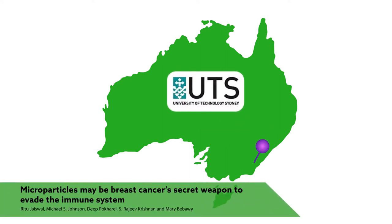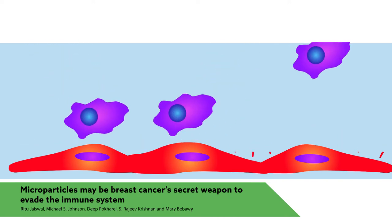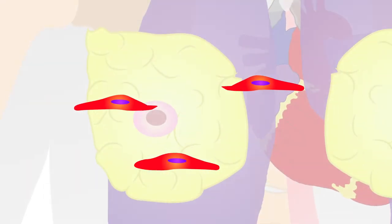Researchers from Australia have uncovered a unique way that drug-resistant breast cancer cells trick the immune system, potentially allowing them to spread through the body unchecked.